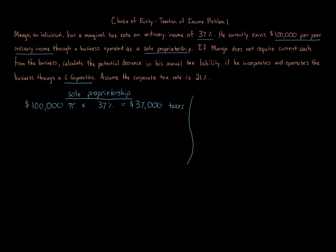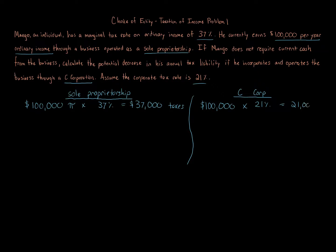Now if we switch over to a C corporation, the tax rate as stated in the problem is 21 percent. We take the one hundred thousand dollar profit, multiply it by our 21 percent rate, and we owe 21 thousand dollars in taxes.